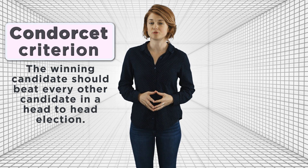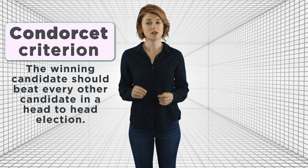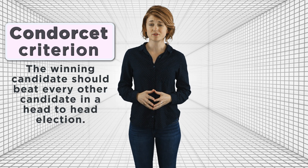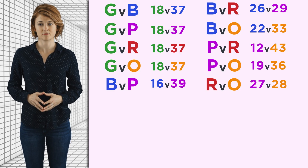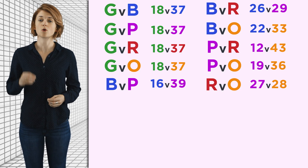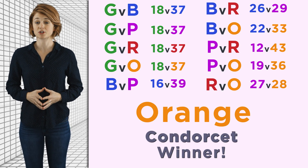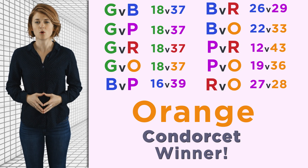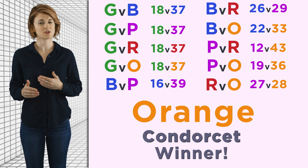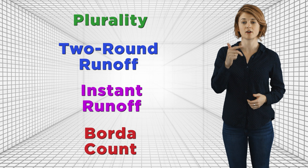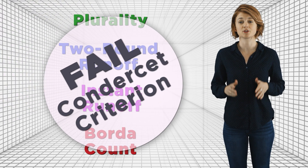We want to study those properties to determine which method is most appropriate for a given context. An often desired property of a voting system is the Condorcet criterion: the winning candidate should beat every other candidate in a head-to-head election — that is, they should win a runoff regardless of who they are competing against. In our pairwise results, orange wins each of its pairs; for example, 36 people rank orange higher than purple, so orange beats purple — making orange the Condorcet winner. But orange lost using each of the other four methods. Since those winners differ from the Condorcet winner, plurality, two-round runoff, instant runoff, and Borda count all fail to meet the Condorcet criterion.